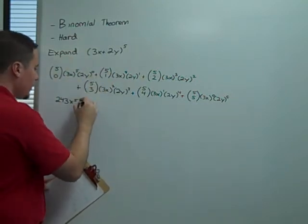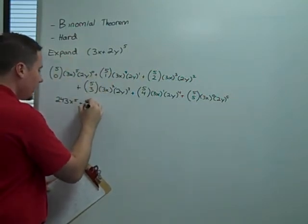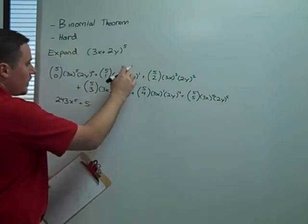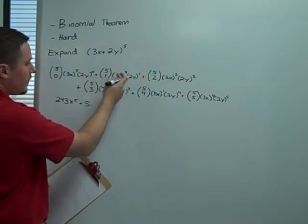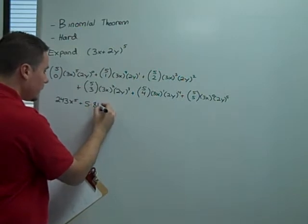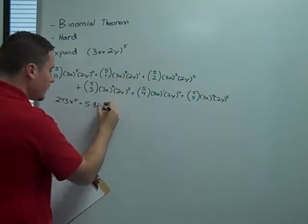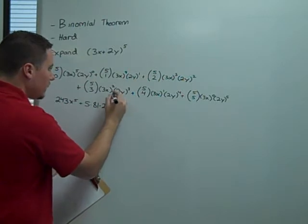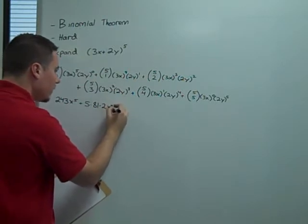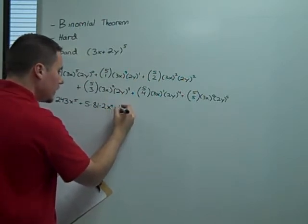Then 5 choose 1 is 5. Numerically, we're getting a contribution from 3 to the fourth, which is 81. And 2 to the first is 2. Now, in terms of x, we're going to have an x to the fourth, y to the first.